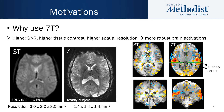The images on the right show brain activations when a healthy subject was listening to music, and the 7T analysis presented more robust brain activations following the gray matter gyrus.